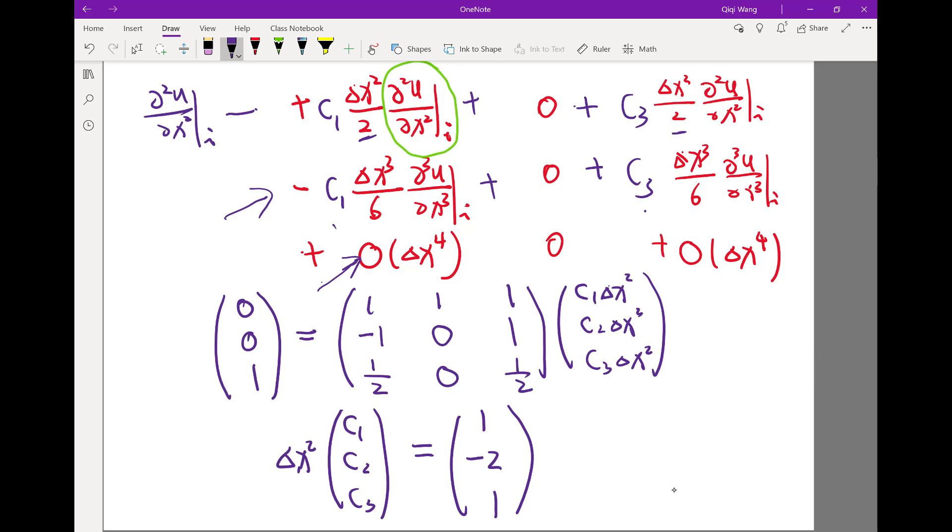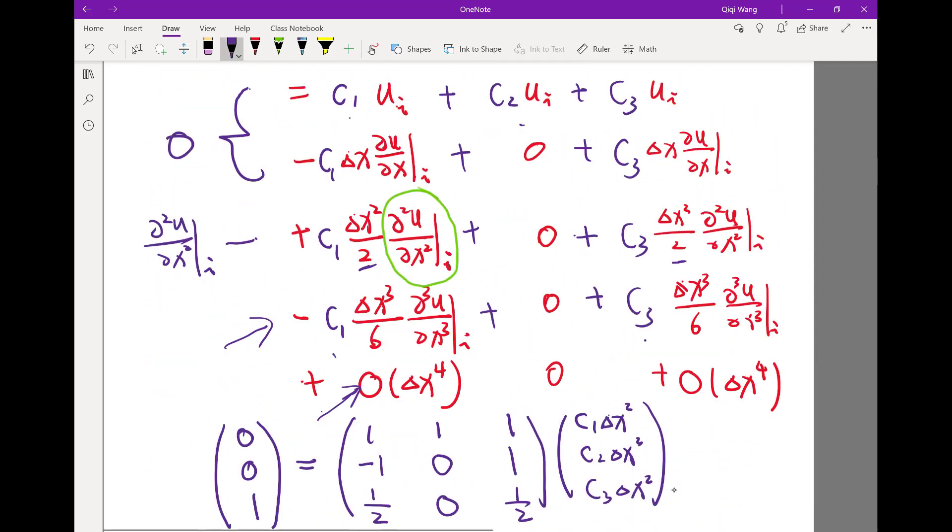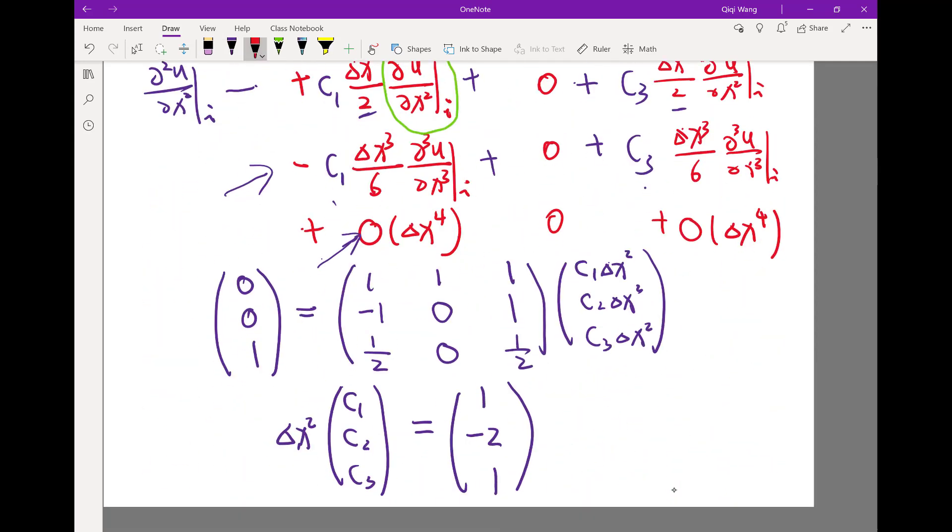So basically if you plug in this C1, C2, C3 into this, what I get is the final conclusion: the second order derivative is approximated by UI minus 1 minus 2 UI plus UI plus 1, all divided by delta x squared. That's my second order derivative.